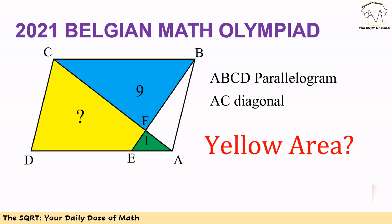Hello everyone. In this video we are going to talk about a problem from the Belgian Math Olympiad 2021. In this problem, ABCD is a parallelogram, AC is a diagonal, and we know that the area of the green triangle is 1 and the area of the blue triangle is 9. We want to find the yellow area.